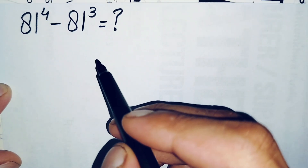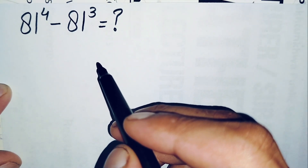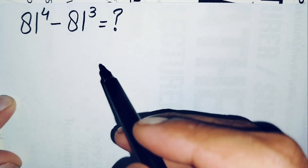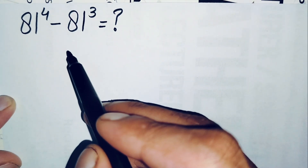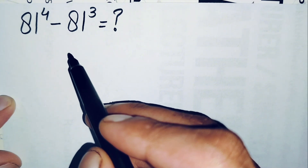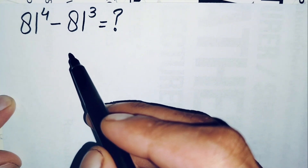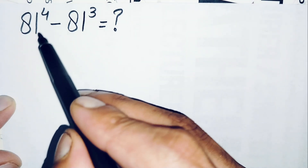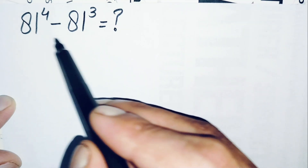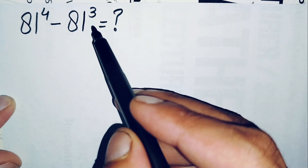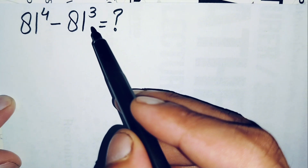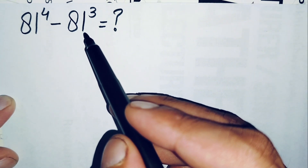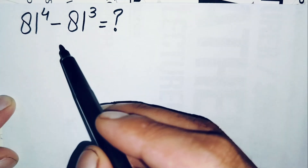Hello everyone, welcome back to Math Explorer. Today we solve and find the value of this simplification math problem: 81 raised to power 4 minus 81 raised to power 3. Let's start our solution.